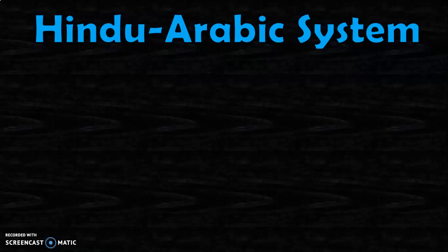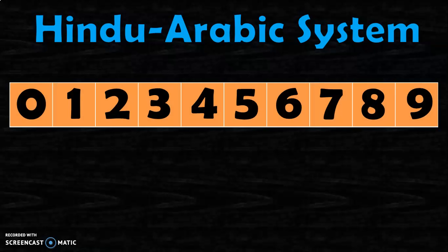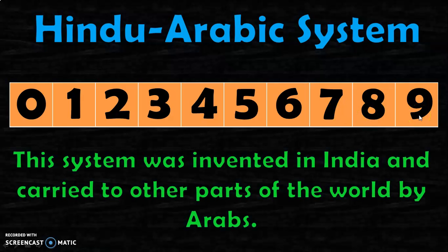The number system that we are using right now is called the Hindu-Arabic system, and we deal with the numerals 0, 1, 2, 3, 4, 5, 6, 7, 8, and 9. This system was invented in India and carried to other parts of the world by Arabs. That is why it is called the Hindu-Arabic system.